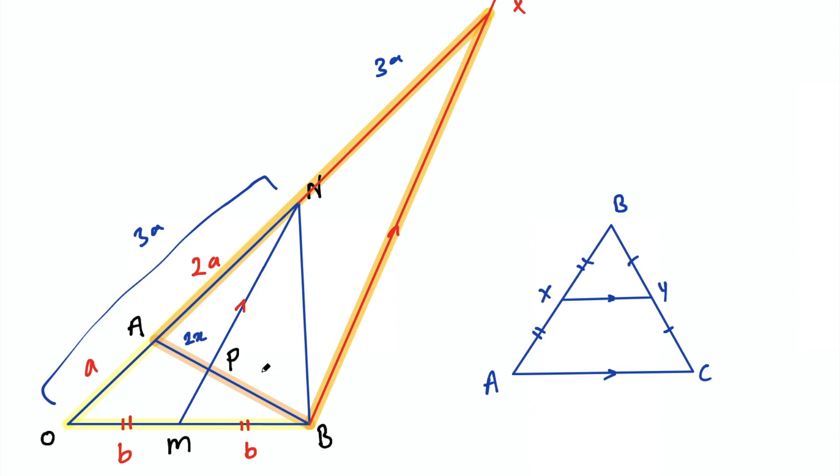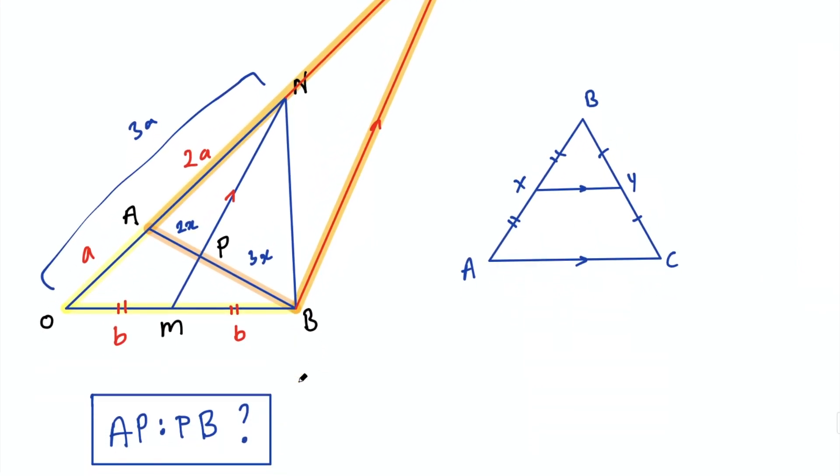So this is going to be 2X to 3X. So that ratio we were asked for, AP to PB, is 2 to 3.